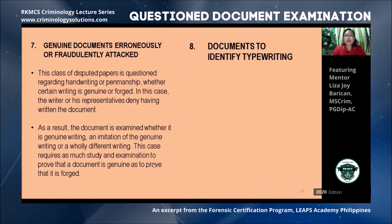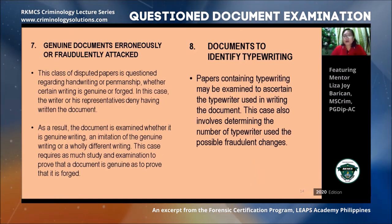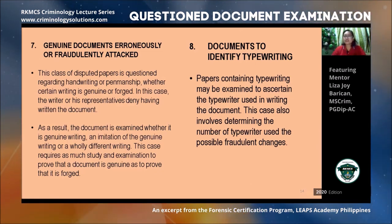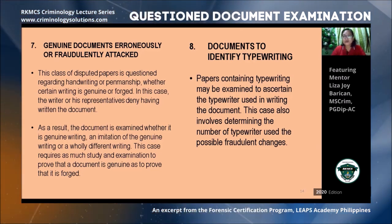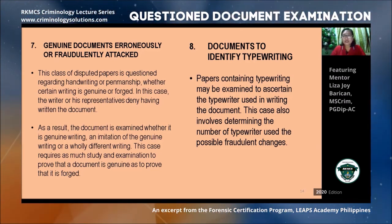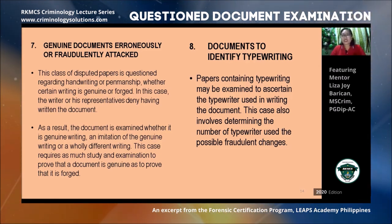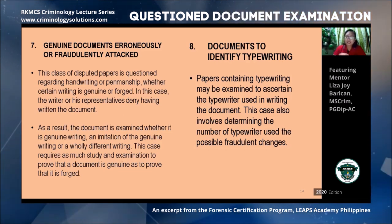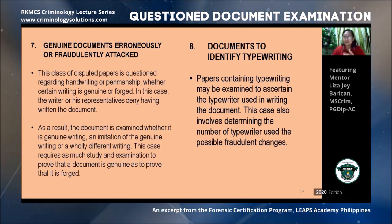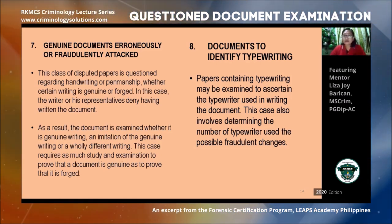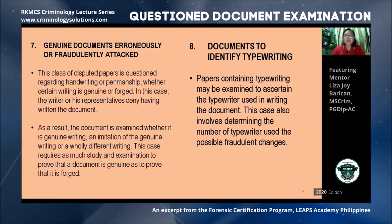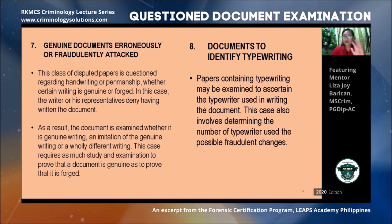The seventh class is questioned documents that are erroneously or fraudulently attacked. This type is being questioned as to the genuineness of the contents of the handwriting — but the handwriting is actually original and genuine. The problem is that the writer may have forgotten they signed or wrote it, possibly because they were undergoing transitory changes at the time — for example, they were intoxicated when they signed. The genuine signature then becomes a questioned document because the writer denies it.